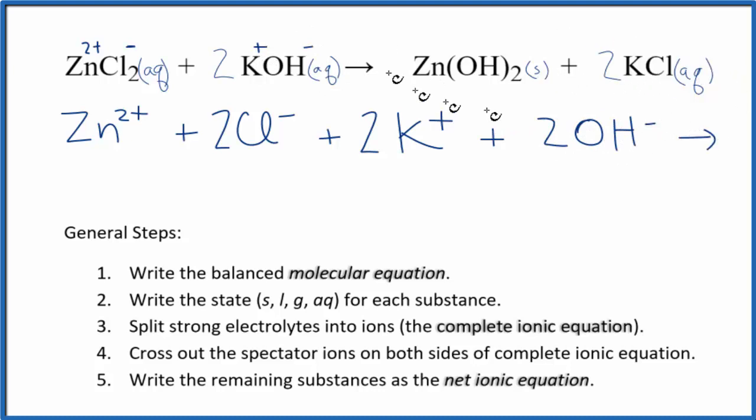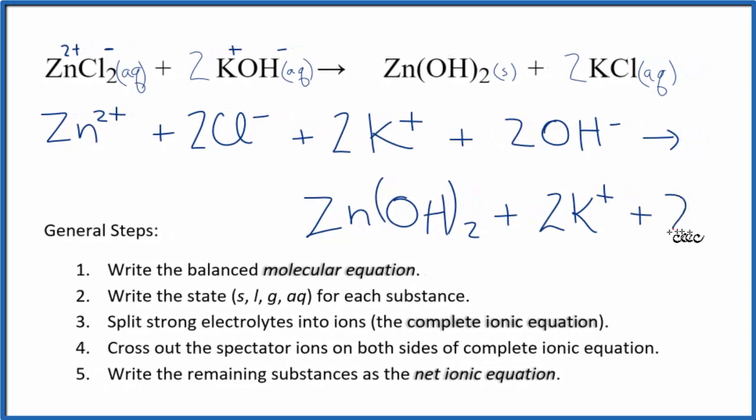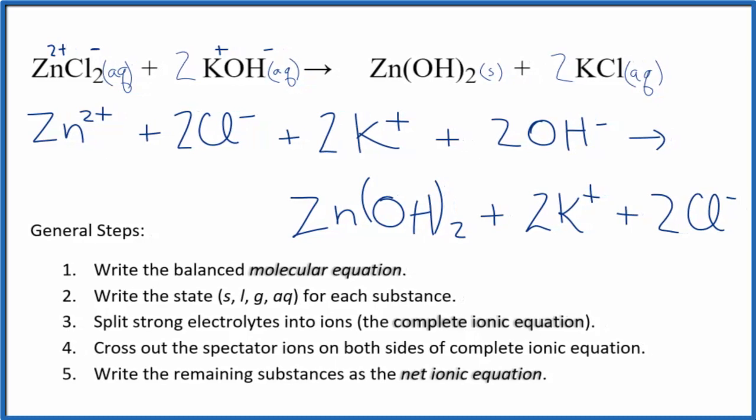For the products, we said this is a solid. It's insoluble. So because of that, in net ionic equations, when we have a solid, we don't split this apart into its ions. So we're going to write Zn(OH)2, because that's going to stay together, it won't split up, plus we have 2 potassium ions and 2 chloride ions. So these are the reactants, and these are the products, and this is the total or complete ionic equation.